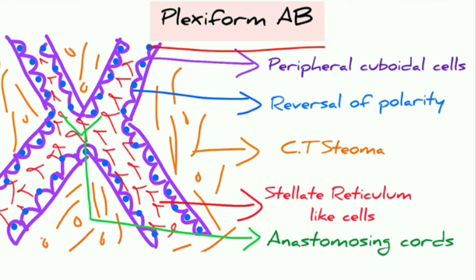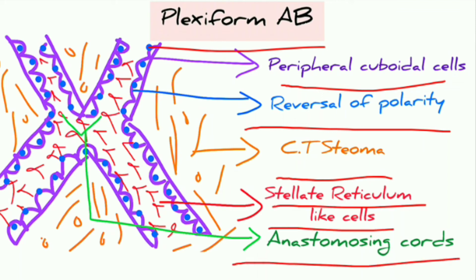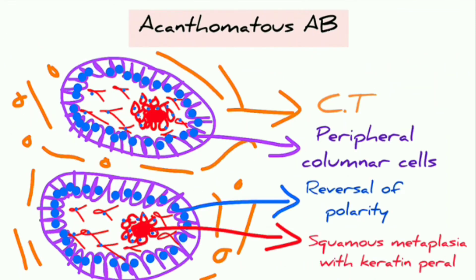In plexiform ameloblastoma, peripheral cuboidal cells are seen with reversal of polarity, connective tissue stroma, stellate reticulum-like cells, and anastomosing cords — cords that are joining with each other.